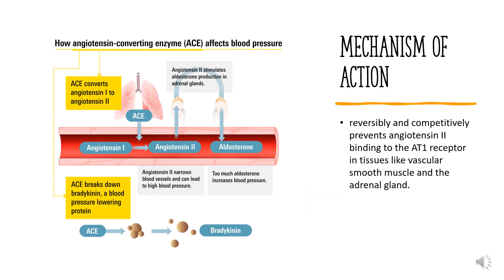Mechanism of Action: Irbesartan prevents angiotensin-2 binding to the AT-1 receptor in tissues like vascular smooth muscle and the adrenal gland. Irbesartan and its active metabolite bind the AT-1 receptor with 8,500 times more affinity than they bind to the AT-2 receptor. This prevention of angiotensin-2 binding causes vascular smooth muscle relaxation and prevents the secretion of aldosterone, lowering blood pressure. By contrast, angiotensin-2 binding to the AT-1 receptor induces vasoconstriction and aldosterone secretion, raising blood pressure.